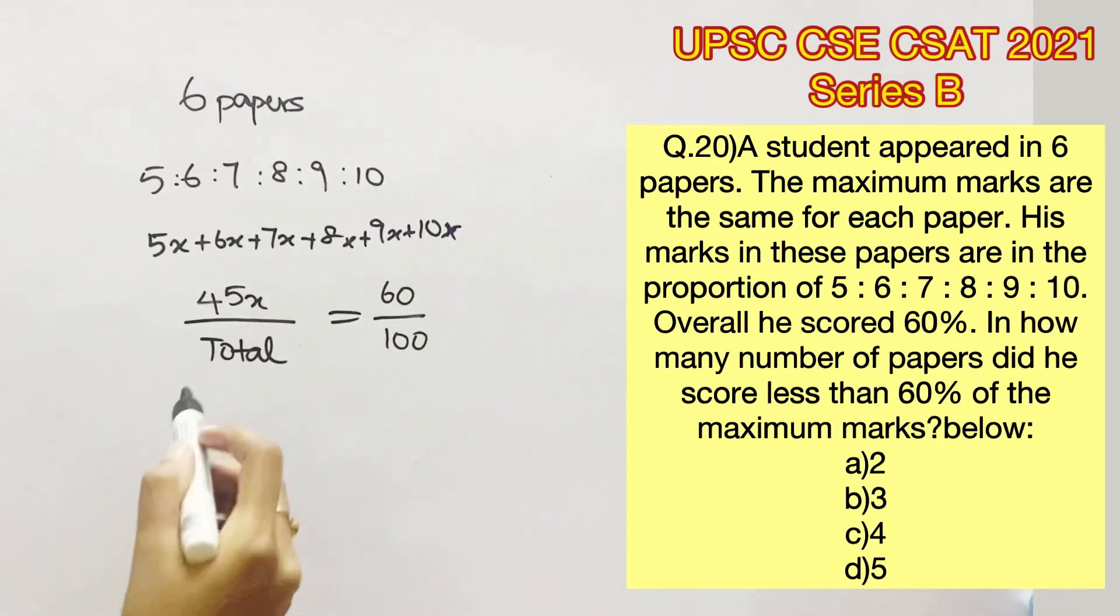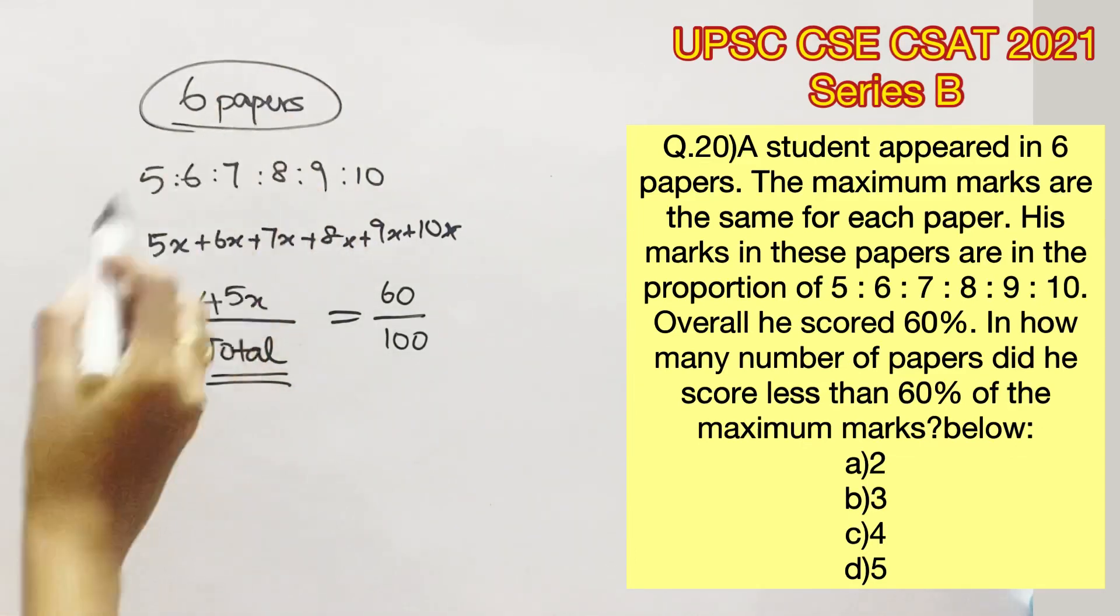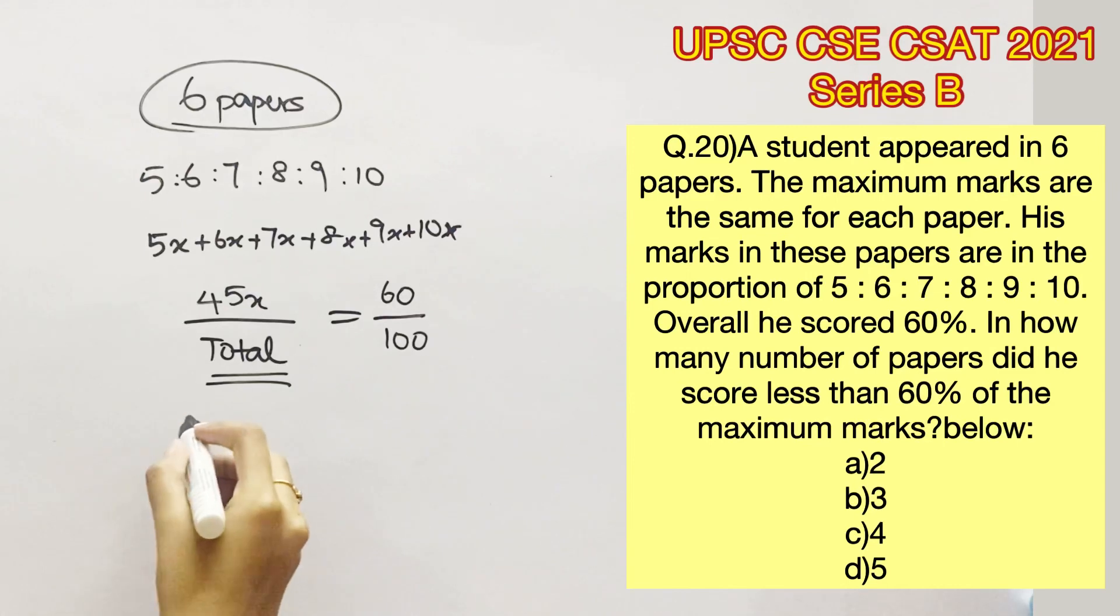The total mark is the maximum marks one can obtain out of these 6 papers. Let's assume maximum marks to be 100 for each paper. Since there are 6 papers, the total marks would be 600. Now we have represented his overall score of 60% in terms of an equation.